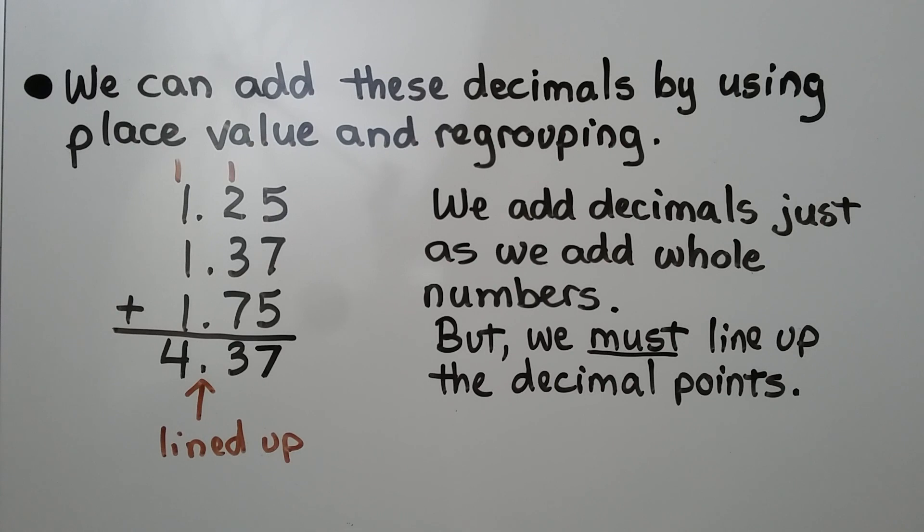Here we have the same decimal numbers. We can add these decimals by using place value and regrouping. We add the decimals just as we add whole numbers, but we must line up the decimal points.